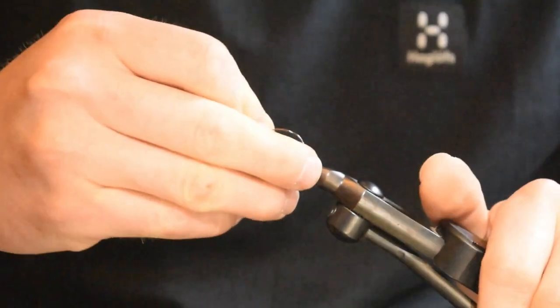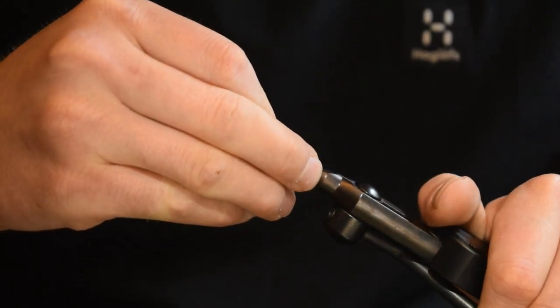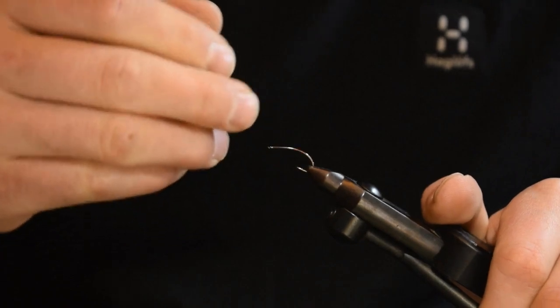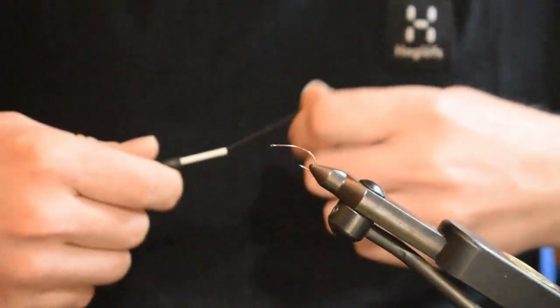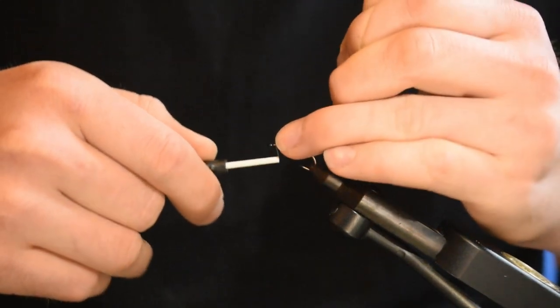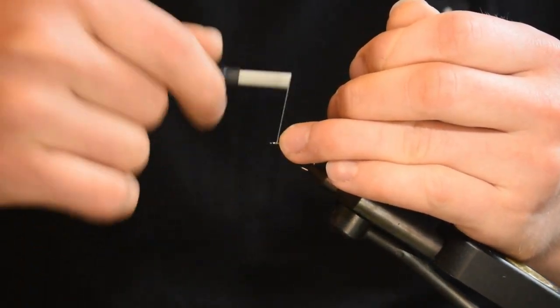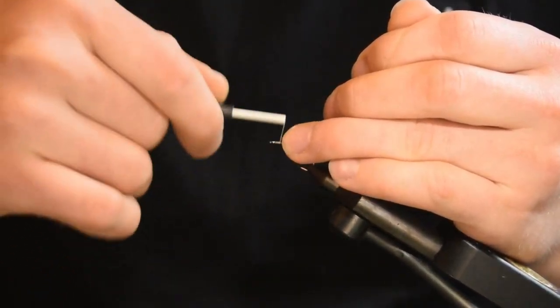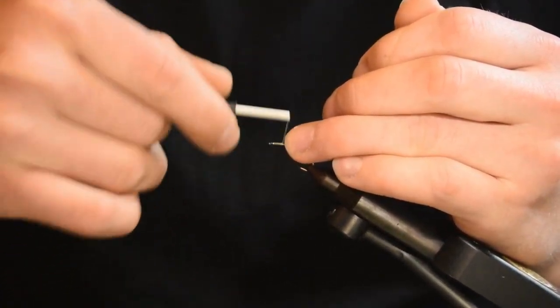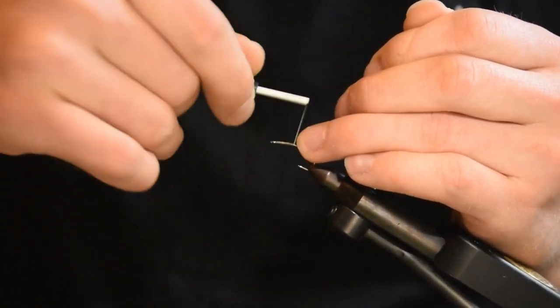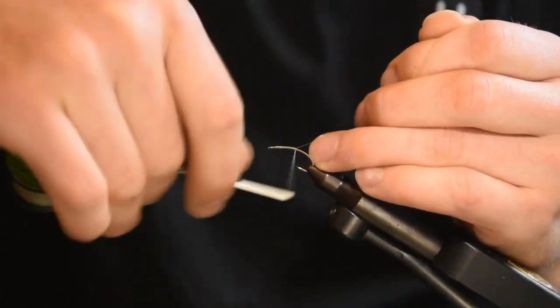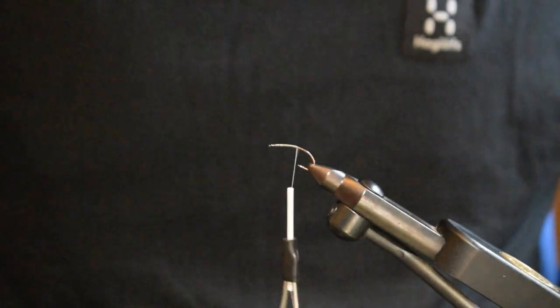I'm going to start off with the hook. It's a Partridge Klinkhamer size 12. And for thread I'm just going to use a normal uni thread size 80 in Rusty Dun. Tie the thread in down the hook shank. Off with the thread.